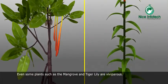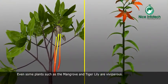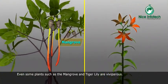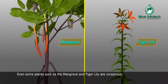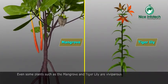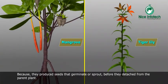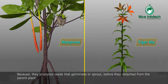Even some plants such as the mangrove and tiger lily are viviparous, because they produce seeds that germinate or sprout before they are detached from the parent plant.